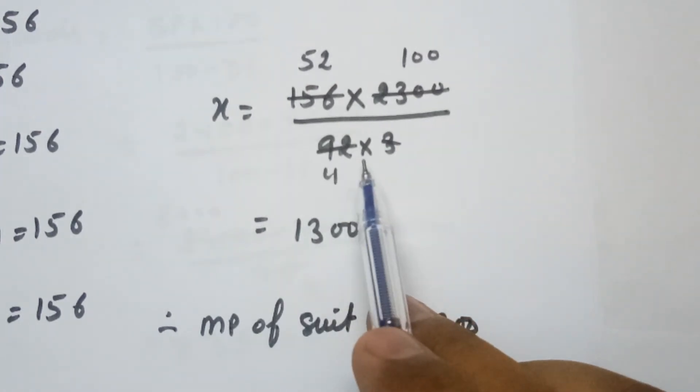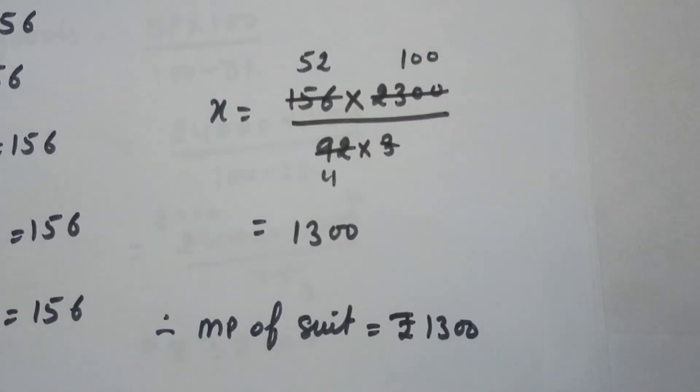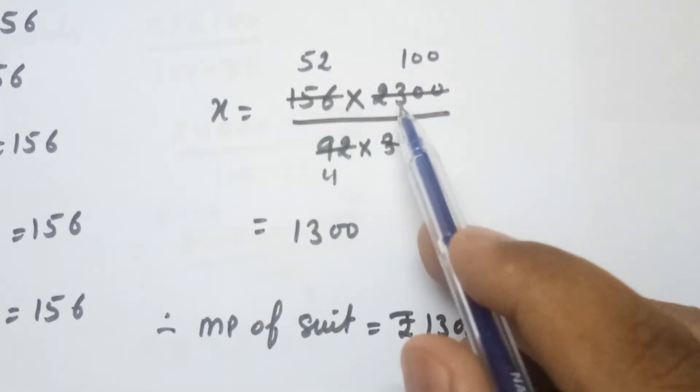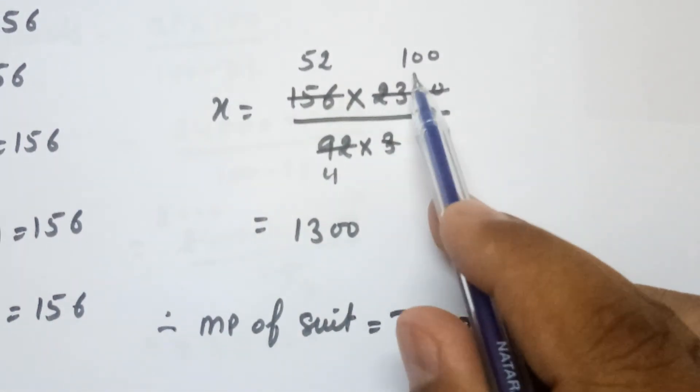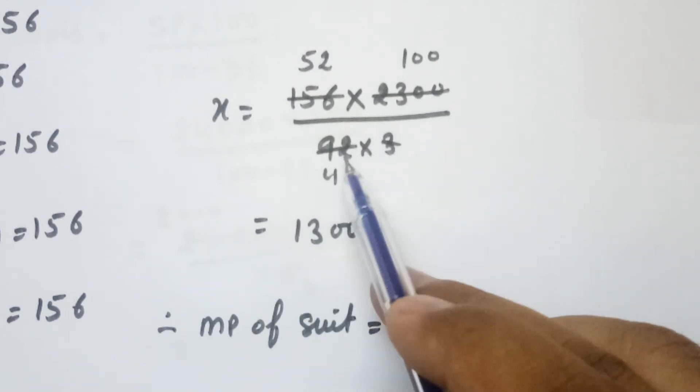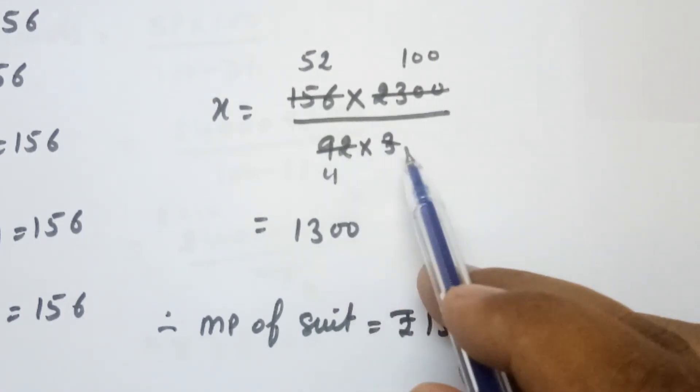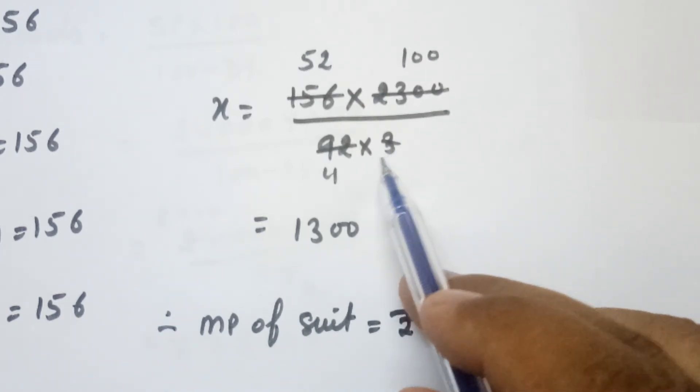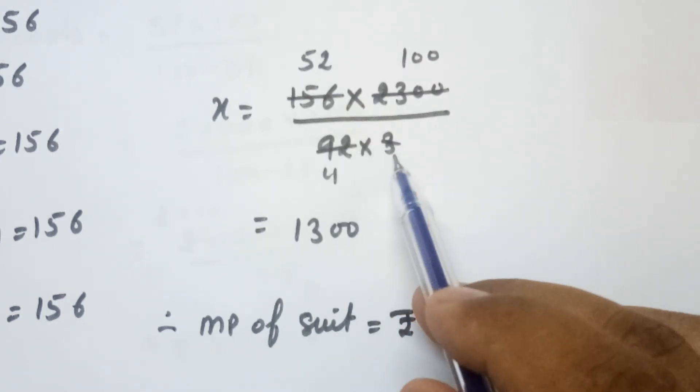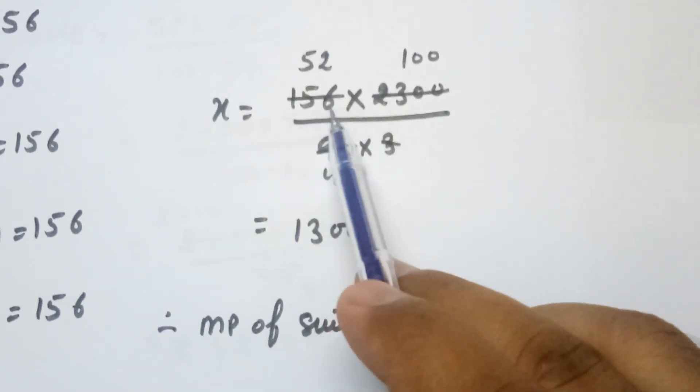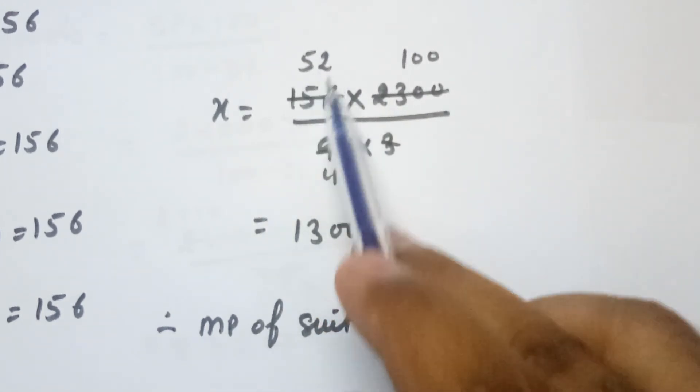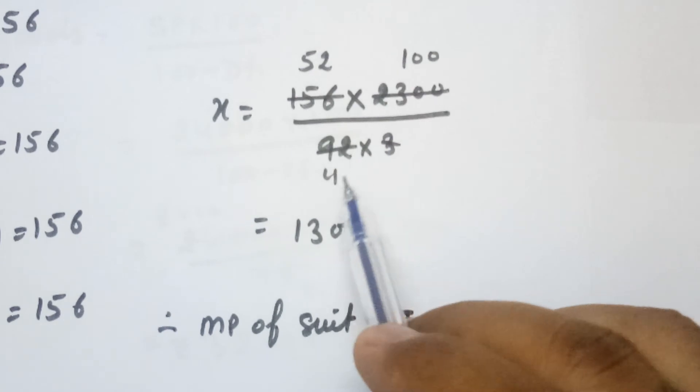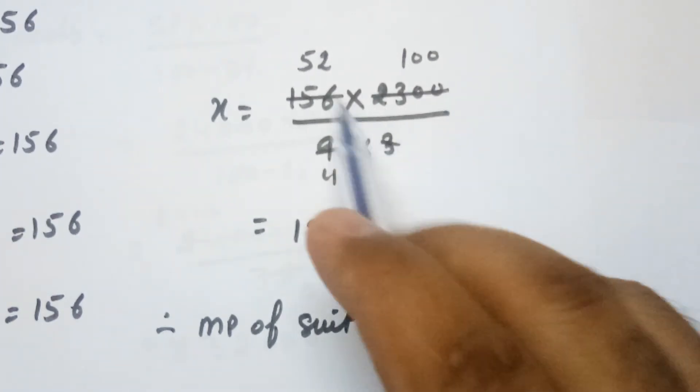Now you can see with the table of 23, 23 times 100 is 2300 and 23 times 4 is 92. And then with the table of 3, 3 times 1 is 3 and 3 times 52 is 156, and 4 times 1 is 4, 4 times 13 is 52.